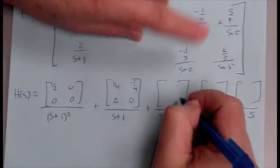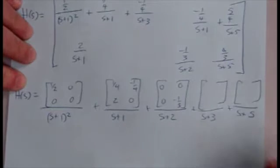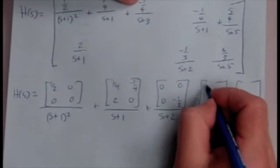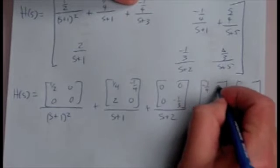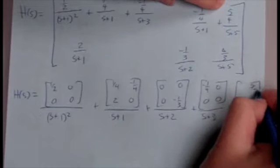S plus 2 only shows up here, so we'll have a negative 1 third, lower right, nothing else. S plus 3 up here, lower else, and S plus 5 is on those two right-hand side ones.